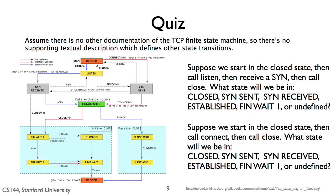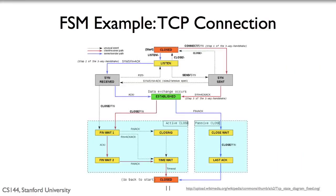The answer to the first question is FIN wait 1. We start in the closed state. Then the user program calls listen, and we transition to the listen state. Then the socket receives a SYN, and we transition to the SYN received state. While in the SYN received state, the user program calls close, so we traverse the edge with close as an event to the FIN wait 1 state. The answer to the second question is closed. We start in the closed state, the user program calls connect, and we transition to the SYN sent state. While in the SYN sent state, the user program calls close, so there's an edge from SYN sent on the close event back to the closed state.